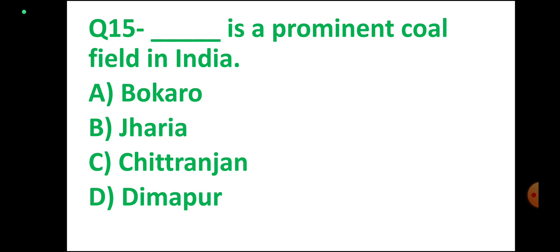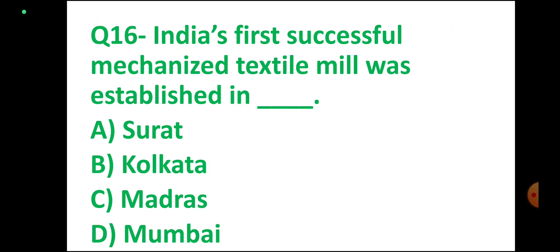Question number 15. DASH is a prominent coal field in India. Options: Bokaro, Jharia, Chittaranjan, Dimapur. Correct answer: Jharia. Option B. Correct.